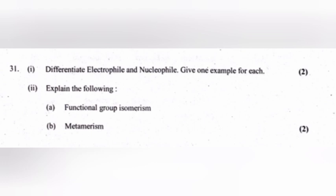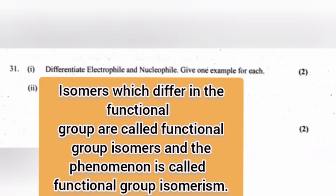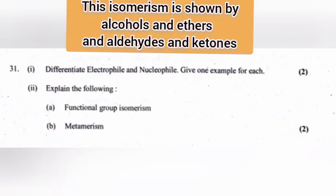Functional group isomerism: Isomers which differ in the functional group are called functional group isomers and the phenomenon is called functional group isomerism. This isomerism is shown by alcohols and ethers, and aldehydes and ketones.